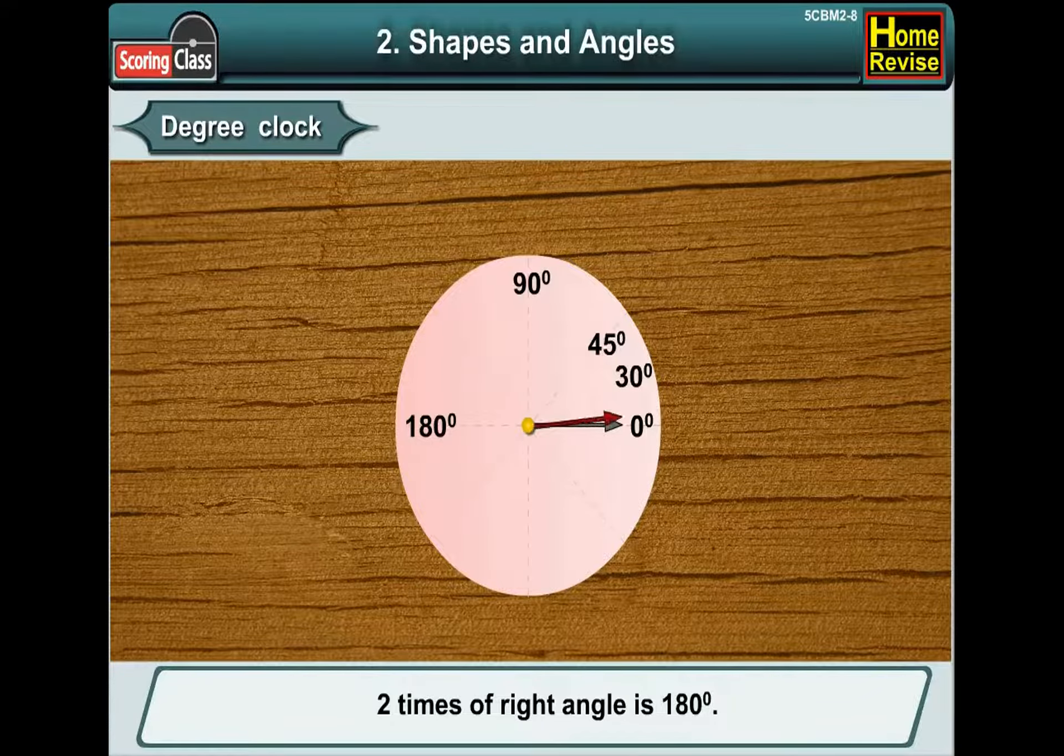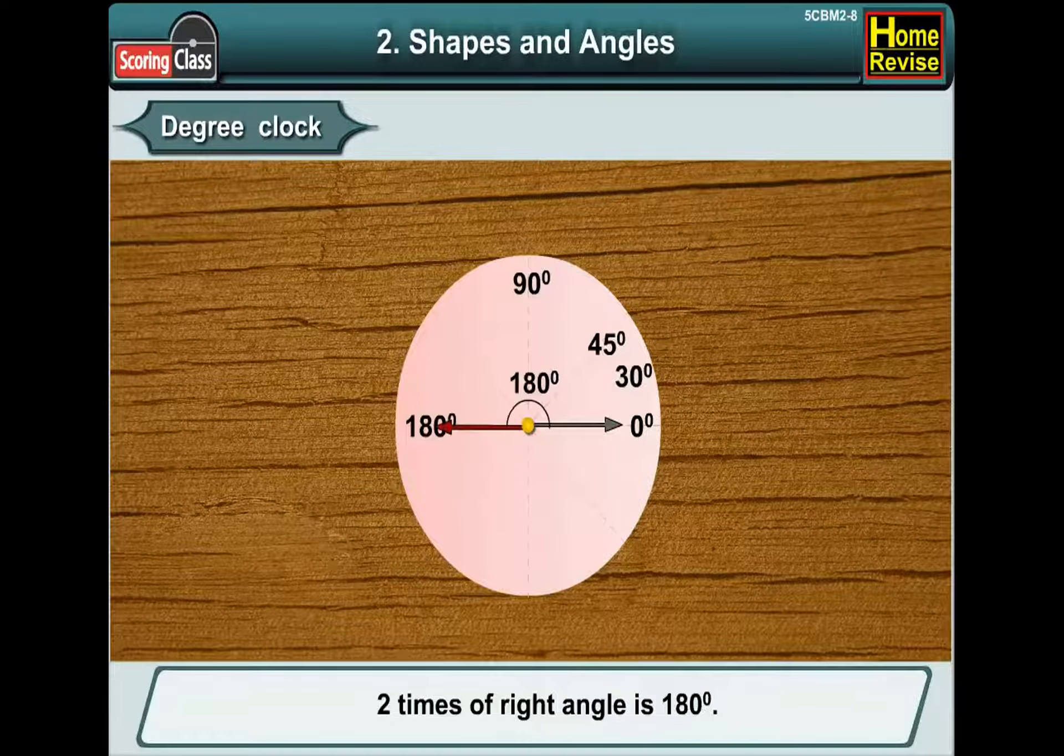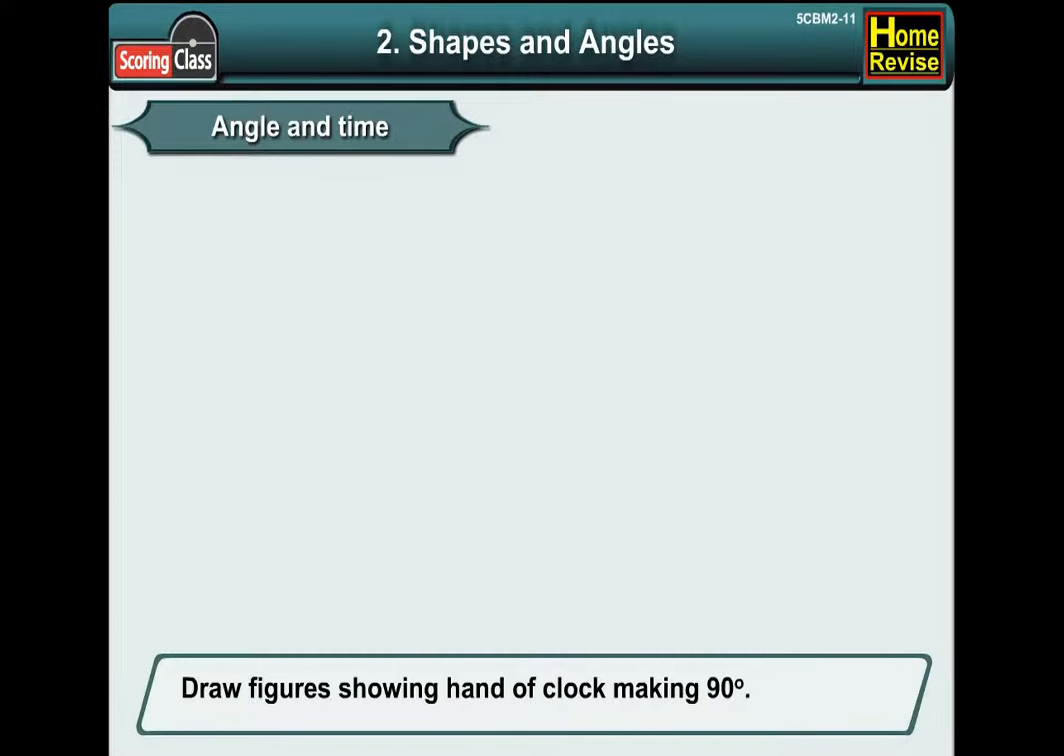And two times of right angle is 180 degrees. Angle and time. Draw four figures showing hands of clock making 90 degrees. Let's try and do it.